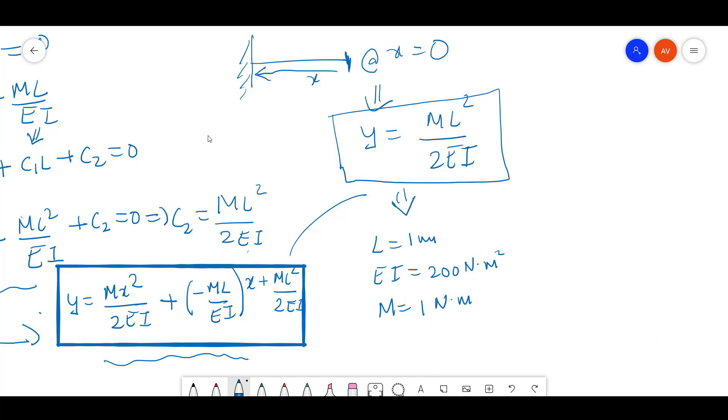Substituting these values, you are going to get y equals 1 times 1 squared by 2 times 200.